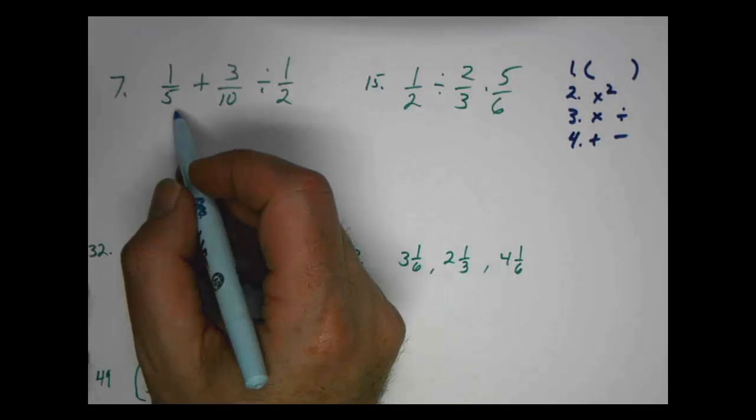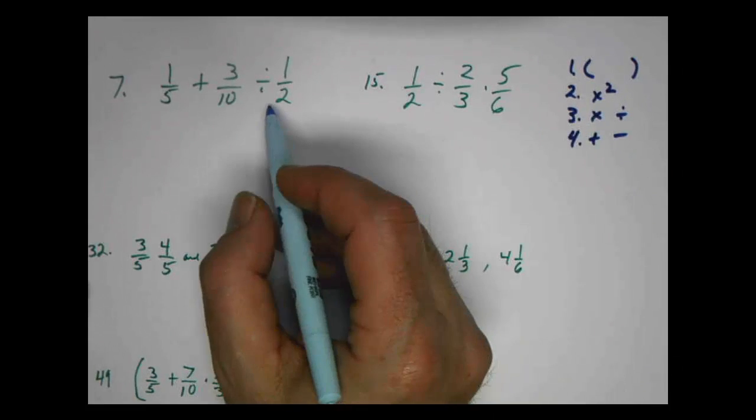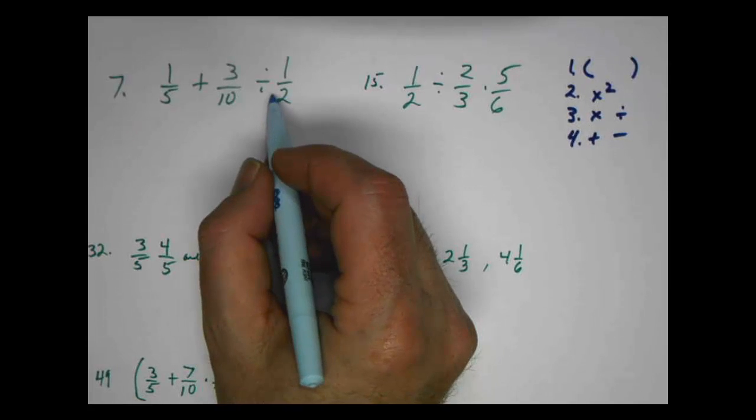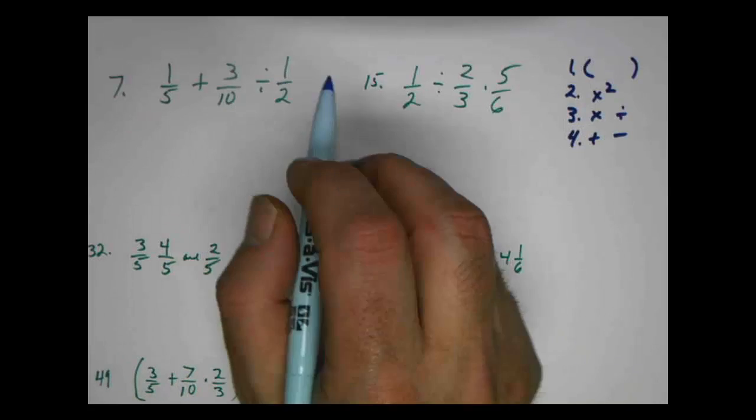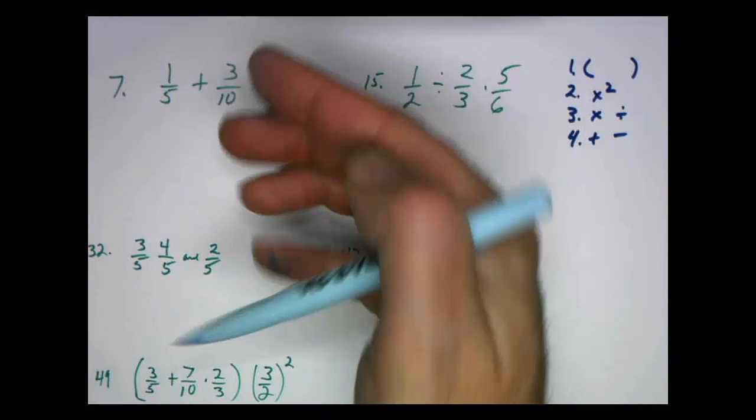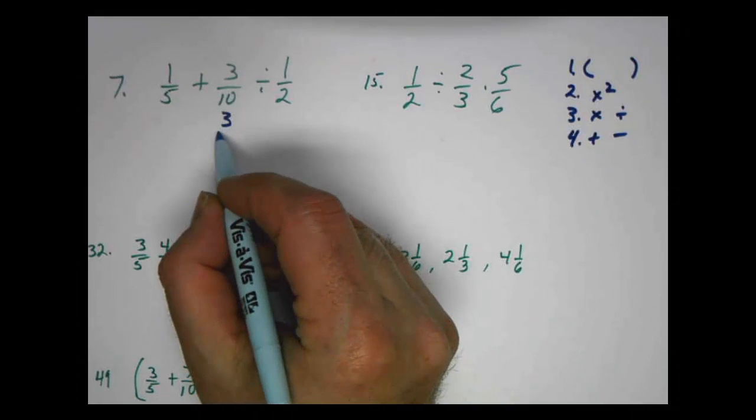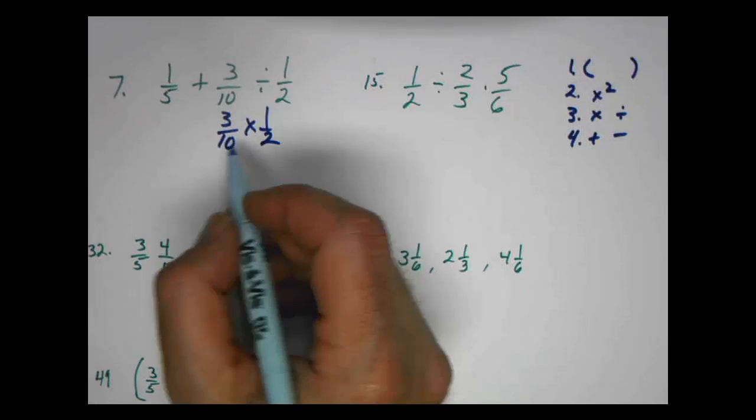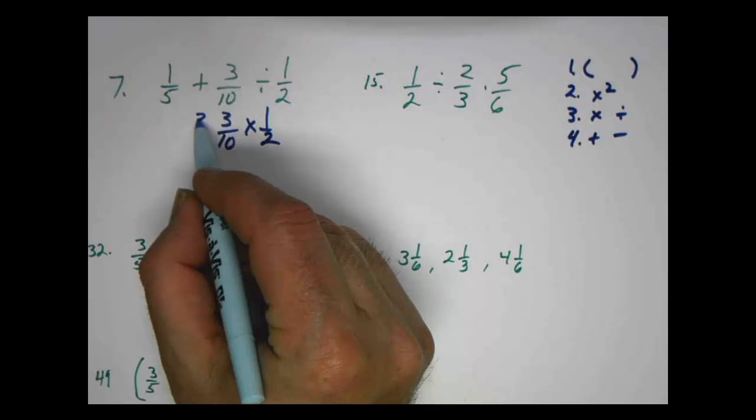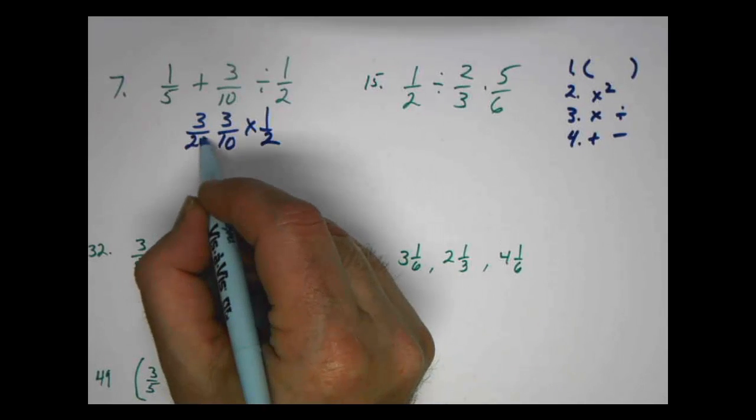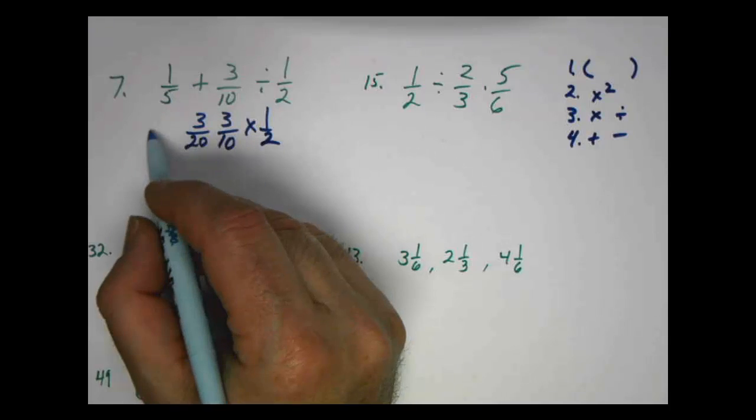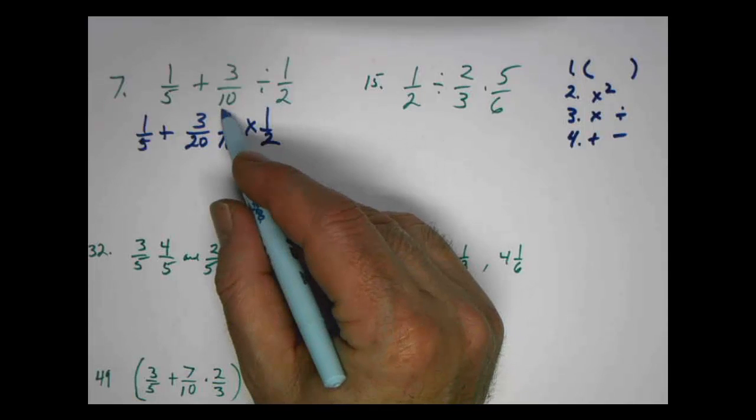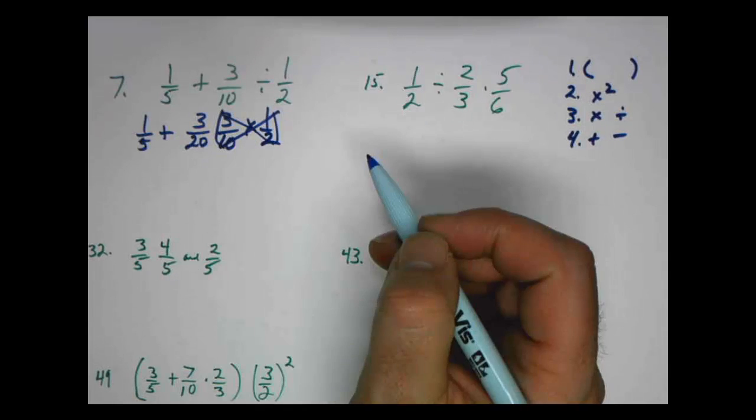So when we look at problem number seven, we don't have any brackets, we don't have any exponents, but we do have a division sign. So we need to deal with that part of the problem first. Remember when we have a division we're going to flip it and make it a multiplication problem. So it's going to be 3 tenths times 1 half. We're going to do that problem first. So 1 times 3 is 3, 2 times 10 is 20. We didn't do anything with the 1 fifth plus, so that just drops down, but we did take care of this. So that one's done now.